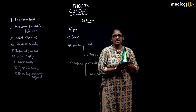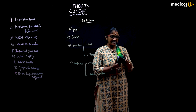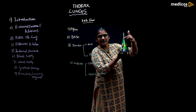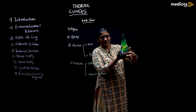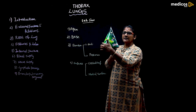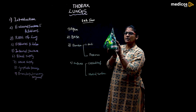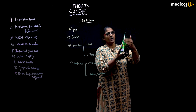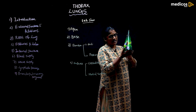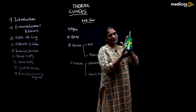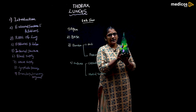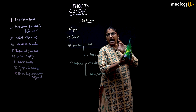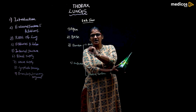The anterior border is sharp and the posterior border is rounded. The costal surface is rounded and convex, situated laterally. Between the anterior border and the posterior border, laterally will be the costal surface and medially will be the medial surface of the lung.